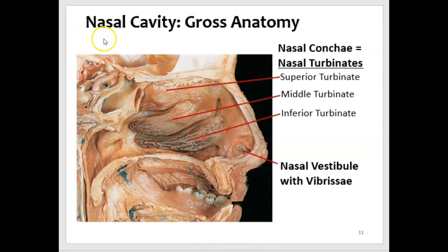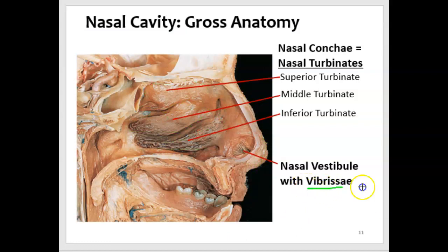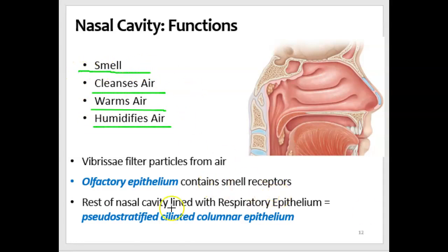Looking at the gross anatomy in a cadaver, you can see the superior turbinate, the middle turbinate, and the inferior turbinate, which is its own bone. The nasal cavity also has a little pocket in the front called a vestibule, and in the vestibule are hairs called vibrisae, which help filter the air by trapping particles. The functions of the nasal cavity include cleansing, warming, and humidifying the air, as well as smell.